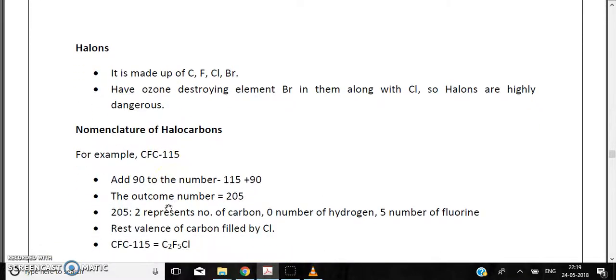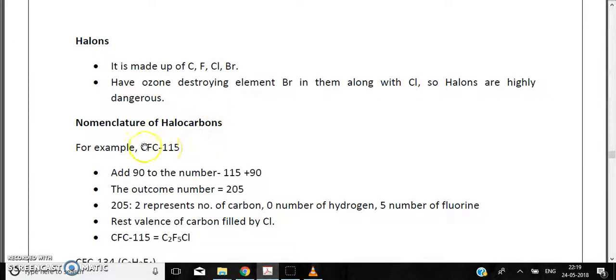Now let's come to the nomenclature of halocarbons. For example, we took CFC-115. The steps are simple: first we will be adding 90 to the number in front of CFC. So when we add 90 to 115, it comes out to be 205. This number 205, each digit indicates something. For example, 2, the first digit, indicates the number of carbons; the second digit, which is 0 here, indicates the number of hydrogens; and the third digit, 5, indicates the number of fluorines. The rest of the valences for carbon are fulfilled by chlorine.